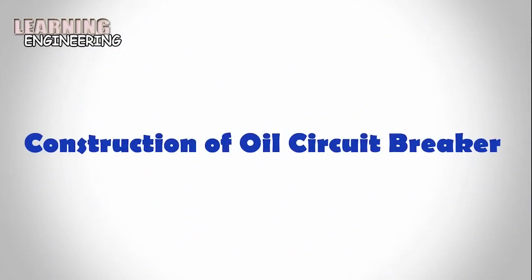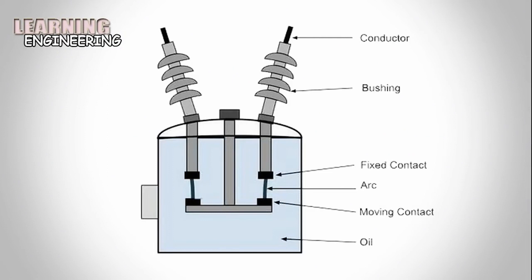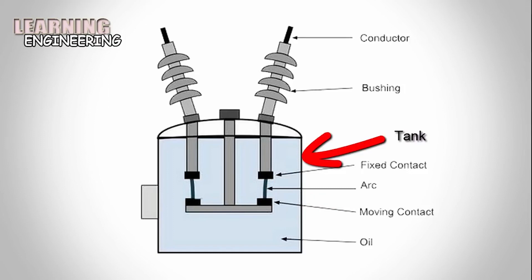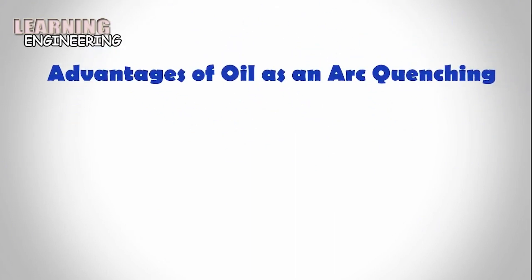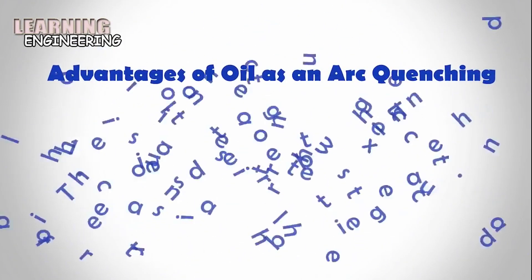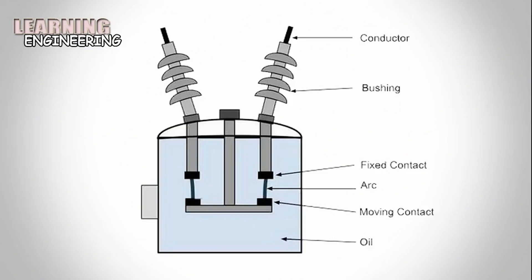Construction of Oil Circuit Breaker: An oil circuit breaker is very easy in construction. It consists of current-carrying contacts enclosed in a strong, weather-tight earthed metal tank, and the tank is filled with transformer oil. The oil acts as an arc-extinguishing medium and as an insulator between the live parts and earth.